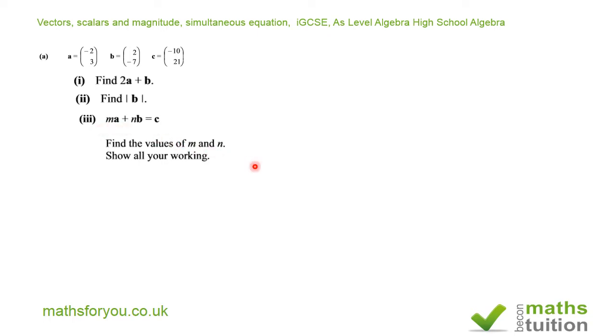Now, for the first one, we got 2A + B. That's my 2, which is the scalar value there, and that's my A, which is (-2, 3), plus B, which is (2, -7). If I expand these brackets here, I end up with (-4, 6) plus (2, -7).